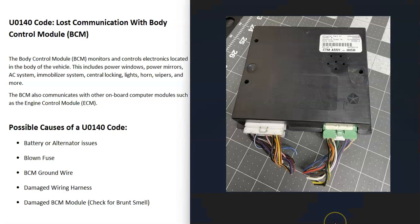What does this mean? Well, there could be different computer modules inside of a vehicle. There could be the ECM, which is the engine control module. There could be the TCM, which is the transmission control module. There could be a module for the ABS. And one of these modules is called the body control module. This basically controls all the electronics inside the body, so this would include things like the power windows, power mirrors, the AC system, the immobilizer, your door locks, things along these lines. And the main onboard computer has seen a problem with this — it's not able to communicate with it.